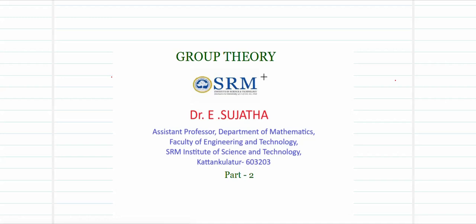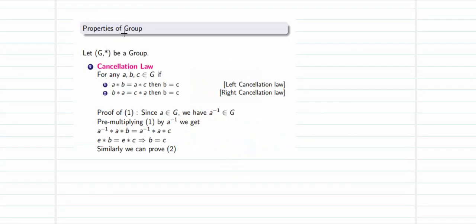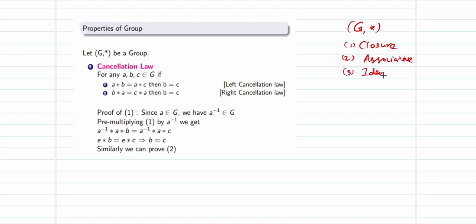Welcome to the second video on group theory. This video will concentrate on the five properties of group theory. First, keep in mind that a group is a non-empty set G along with a binary operation star that satisfies: closure, associative law, existence of identity, and existence of inverse. If these four laws are true on a non-empty set with operation star, then it is called a group.